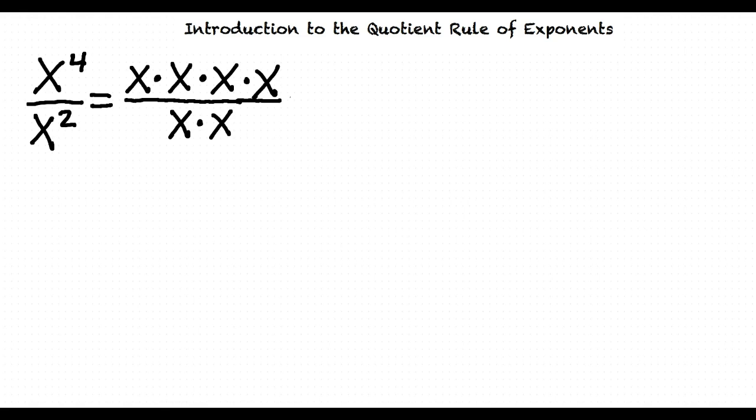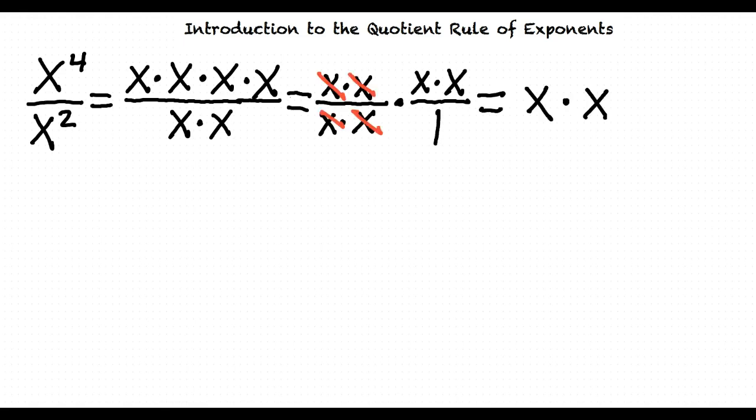But how do we simplify? To simplify, we can cancel the same amount of x's in the numerator as we have in the denominator, because x over x is equal to 1, just as 2 over 2 is equal to 1. This means we can cancel the two x's in the denominator along with the two x's in the numerator. This leaves us with x times x. Now we can finish simplifying by writing the problem in exponential form, giving us x squared.